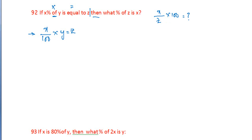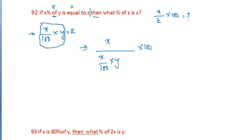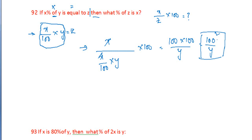So we will substitute the z value. Substituting the z value: x by x by 100 into y, again into 100. So x and x cancel out. That gives 100 into 100 by y, which equals 10,000 by y, or 100 squared by y. So the answer is 10,000 divided by y. Take the square root carefully to get the value.